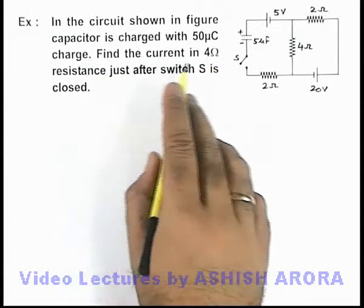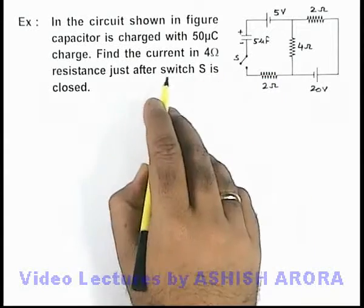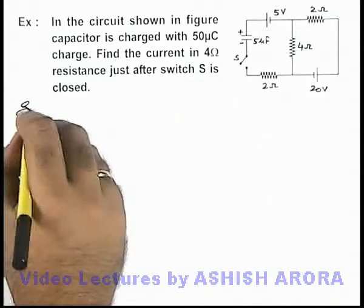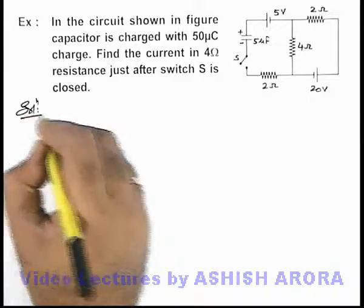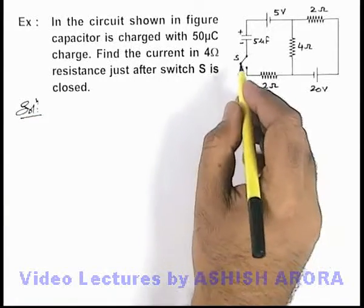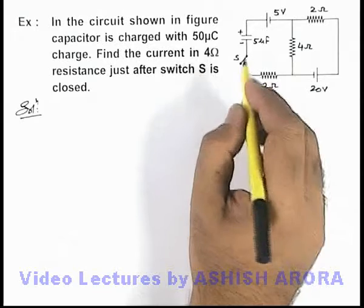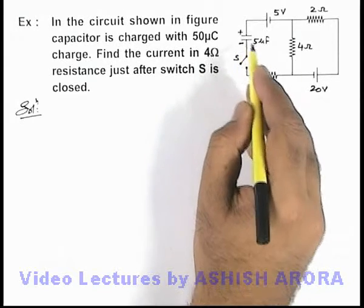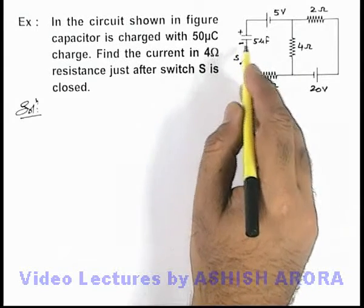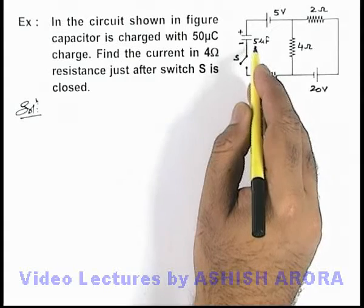We are required to find the current in 4 ohm resistance just after the switch S is closed. Now in this situation, we know that whenever a switch is closed in a given RC circuit, all charged capacitor of circuit behaves like equivalent EMF of value Q by C.